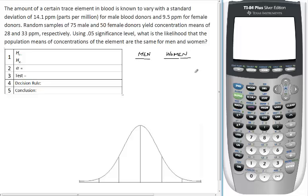We have our first sample as men and our second sample as women. What information do we know about each sample and population? The population standard deviation for males is sigma 1 equals 14.1 parts per million. The standard deviation for females, sigma 2, is 9.5 parts per million.